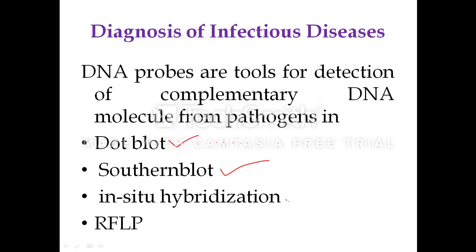In in-situ hybridization, within the cell, the pathogen is localized to identify its presence. Next is RFLP — Restriction Fragment Length Polymorphism. In this hybridization technique, DNA is isolated and digested with a restriction enzyme. The restriction enzyme sites vary from one individual to another, which is the main reason we carry out RFLP. After hybridization with the labeled probe, it is easy to identify the pathogens.